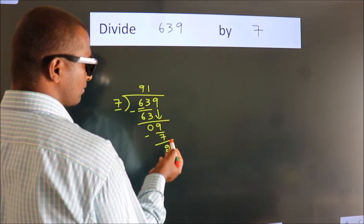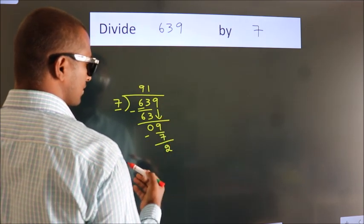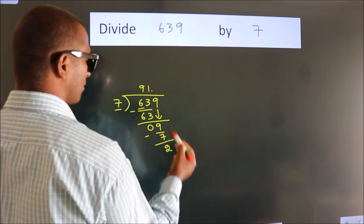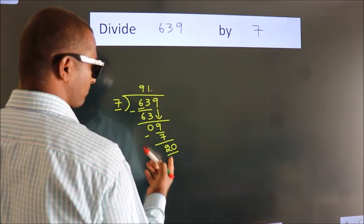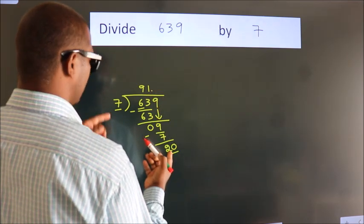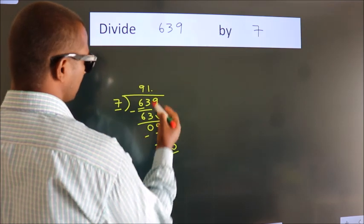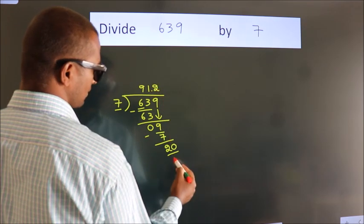After this, no more numbers to bring it down. So what we do is, we put dot take 0. So, 20. A number close to 20 in 7 table is 7 twos, 14.